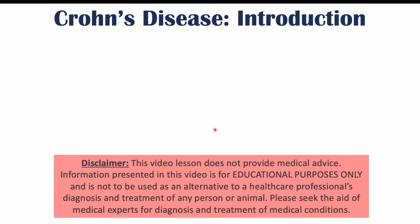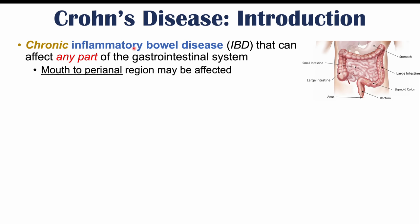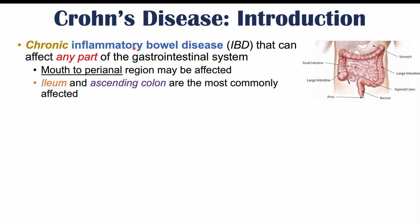Crohn's disease is a chronic inflammatory bowel disease, or IBD, that can affect any part of the gastrointestinal system — anywhere from the mouth to the perianal region. This is in contrast to ulcerative colitis, which is another form of IBD that only affects the colon and rectum.